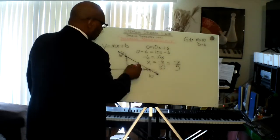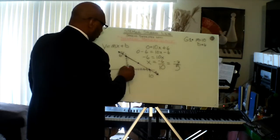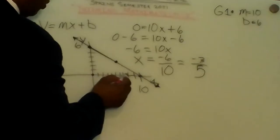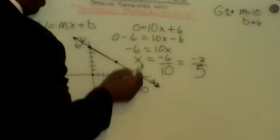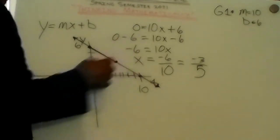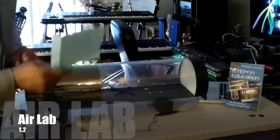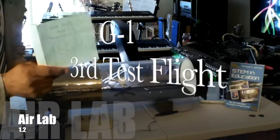We go down from this point 3 — 1, 2, 3 — and go over 5 — 1, 2, 3, 4, 5. This lines up the third equation. Glider 1, 3rd test flight.